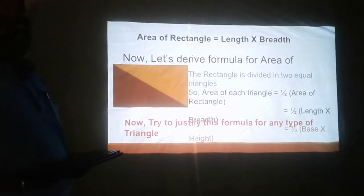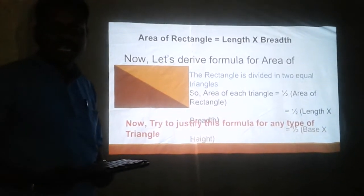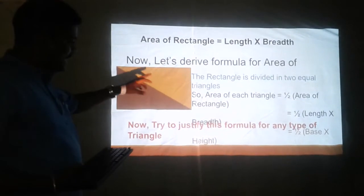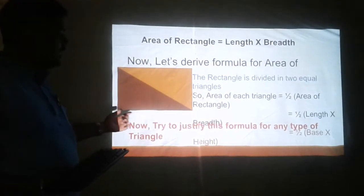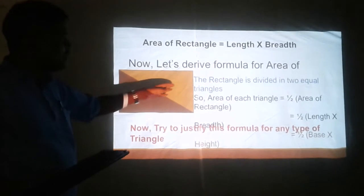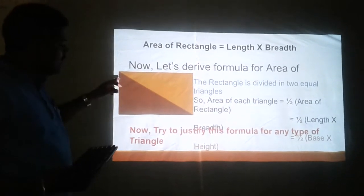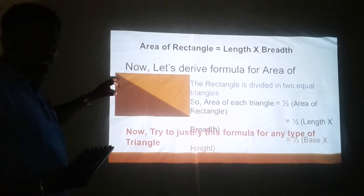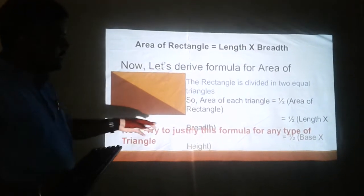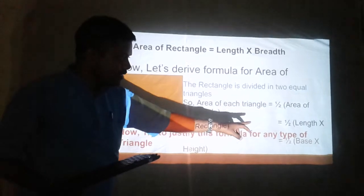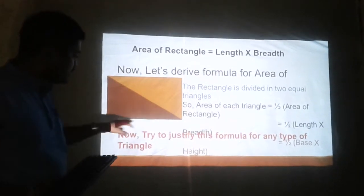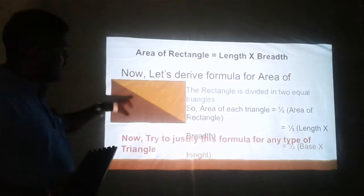Now let us study very interestingly how we can derive the formula for area of triangle. We know the area of a rectangle is base into height, or length into breadth. Here, this diagonal has cut the rectangle into two equal parts. Now the triangle, which is the brown colored one, will have an area equal to half of the area of this rectangle — that is, half into length into breadth, which is half into base into height. This base and height is regarding the triangle.